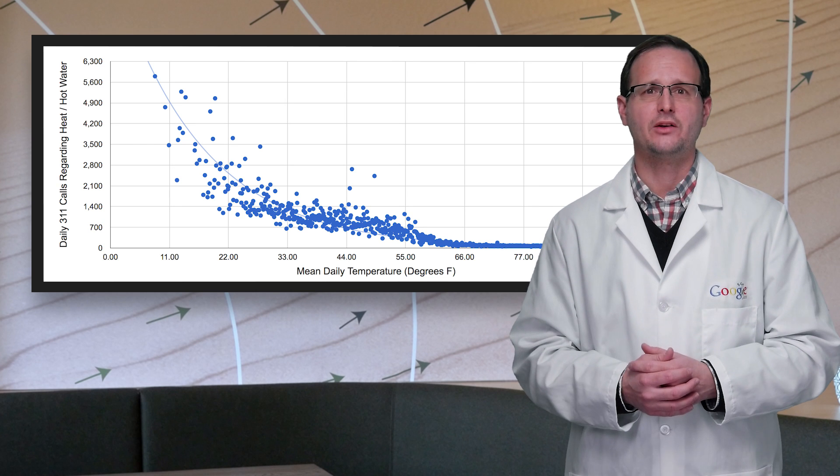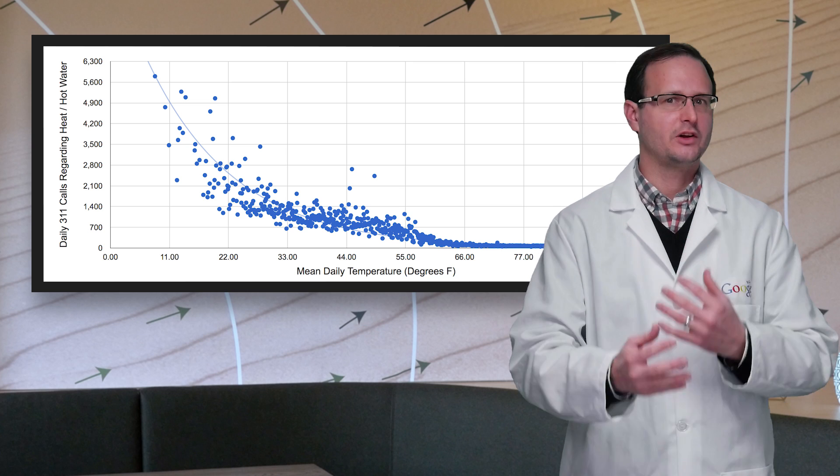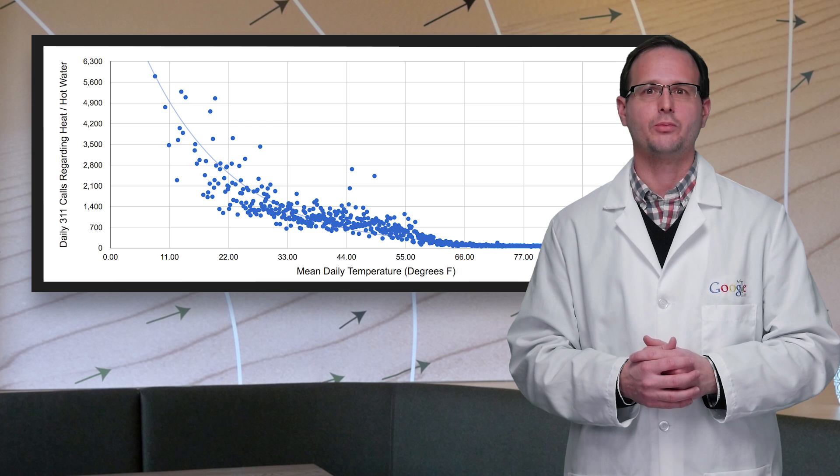So either the abominable snowman is a New Yorker with a penchant for manhole covers, or if we have our causation reversed, manhole covers are what's preventing New York from being swallowed by a snowpocalypse.